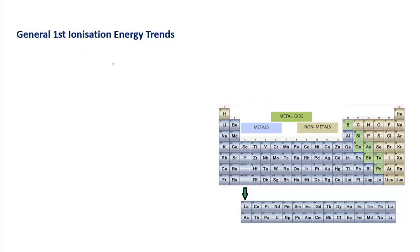The second periodic trend is ionization energy. Ionization means to remove an electron from an atom in its gaseous state. If you have an atom in the gaseous state and you remove the electron from it to change it into a cation, the energy you need to remove the valence electron from that atom is called ionization energy.